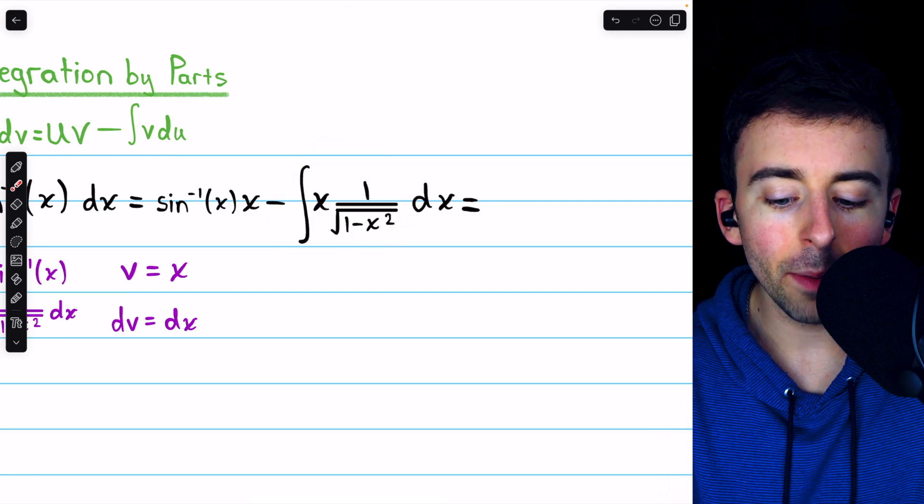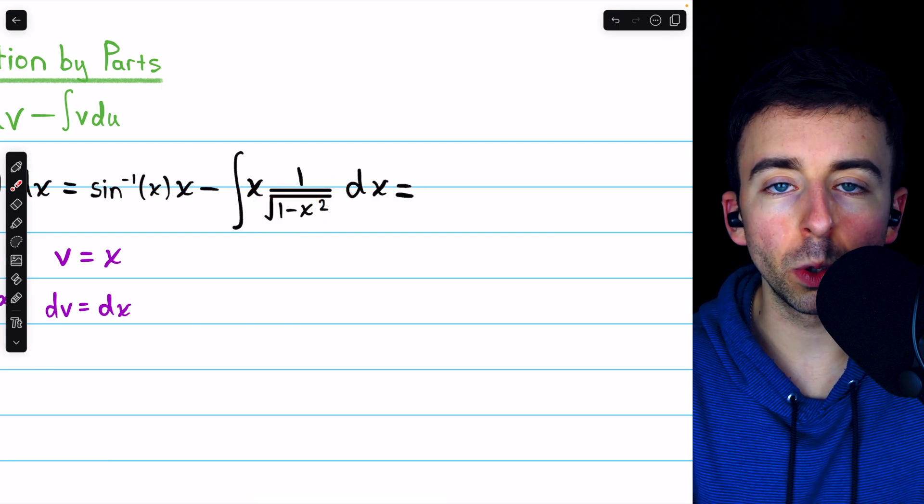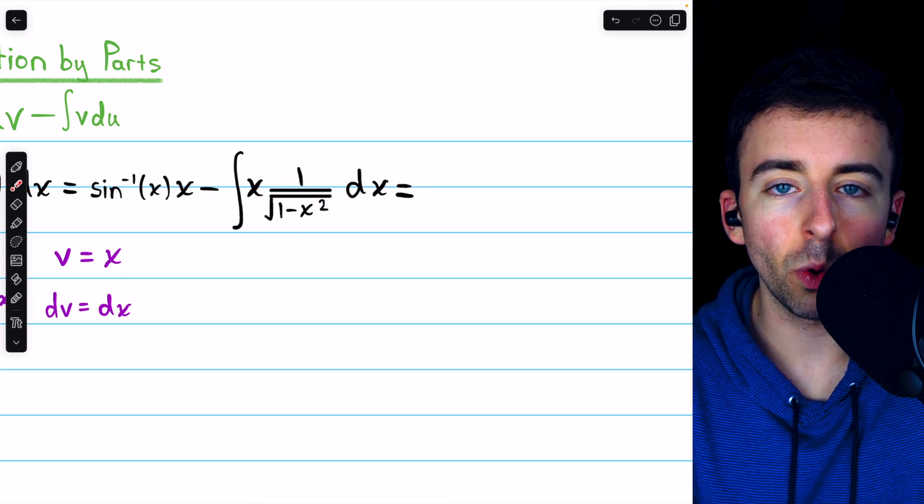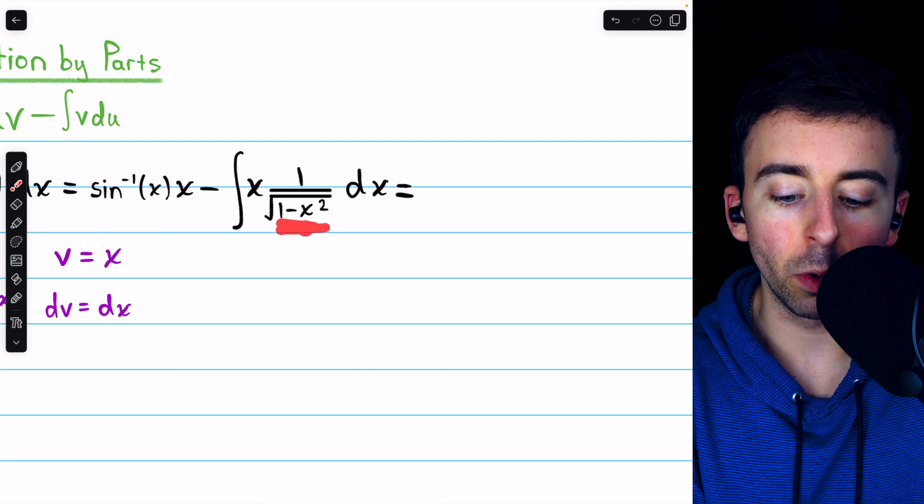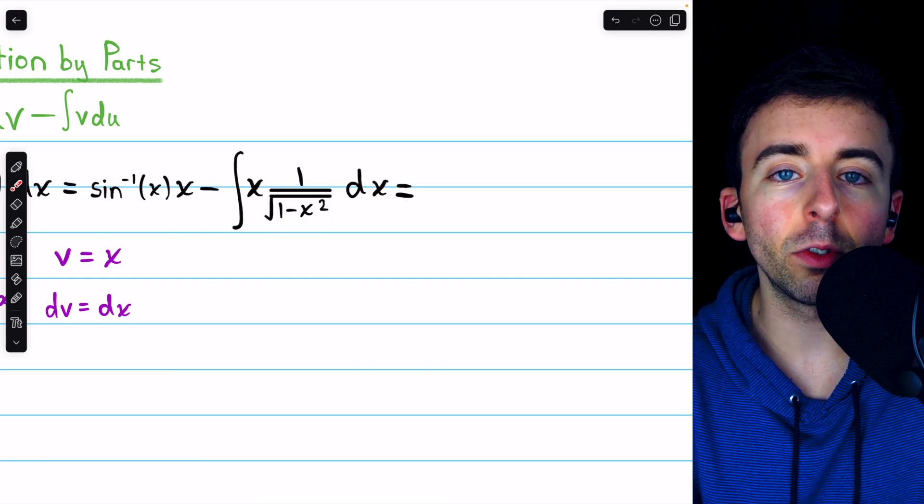Which looks a little ugly, but it's actually not so bad. Look in the denominator. We have the square root of 1 minus x squared. Inside the square root, 1 minus x squared, the derivative of that is negative 2x dx.